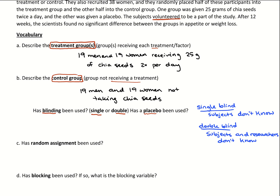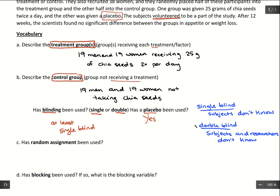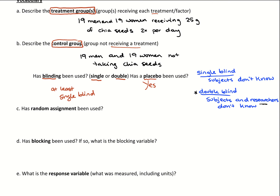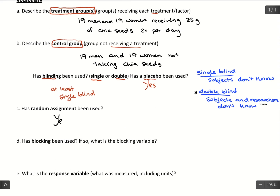In the description of this study, they don't state any of these specifically, but we do have a placebo — the control group was given a placebo. So has a placebo been used? Yes. Has blinding been used? For using a placebo, we should have at least a single blind study, though that's an assumption based on the fact that we have a placebo. Has random assignment been used? Yes — the groups were divided randomly into control and treatment groups.